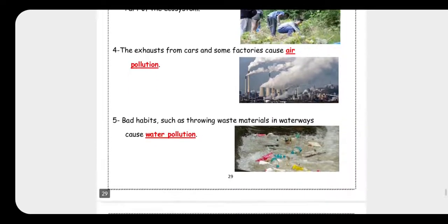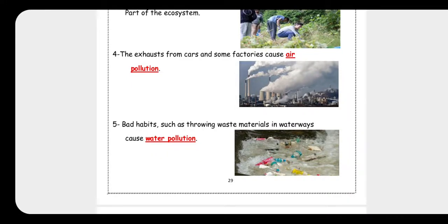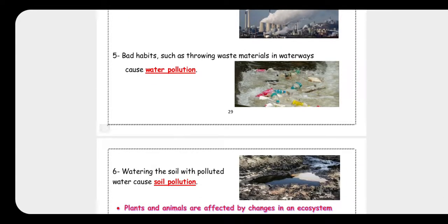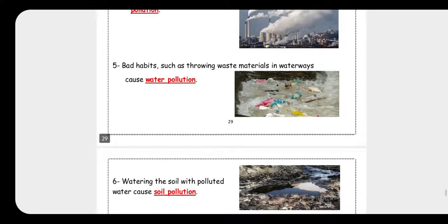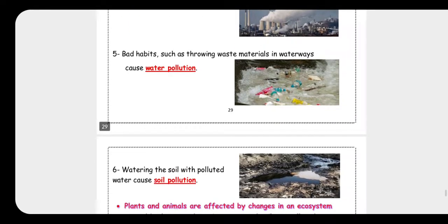Numbers four, five, and six are very important. Exhaust from cars and factories causes air pollution. Bad habits like throwing waste materials into waterways cause water pollution. And watering the soil with polluted water causes soil pollution. So we have three types of pollution: air, water, and soil.